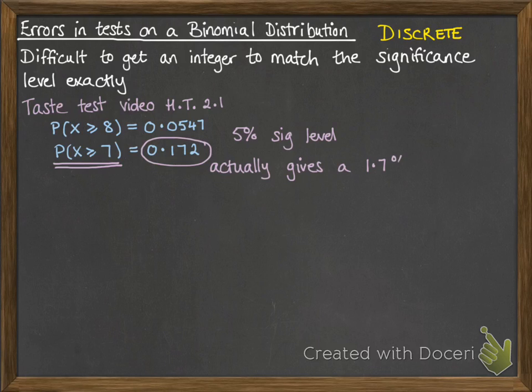This actually gives us a 1.7% significance level rather than 5%. The probability of it happening isn't the 5% we were looking for, it's 1.7%. But it's the closest we can get below 5%. We can't get an exact number because we're looking at discrete variables. We can't go between 7 and 8.